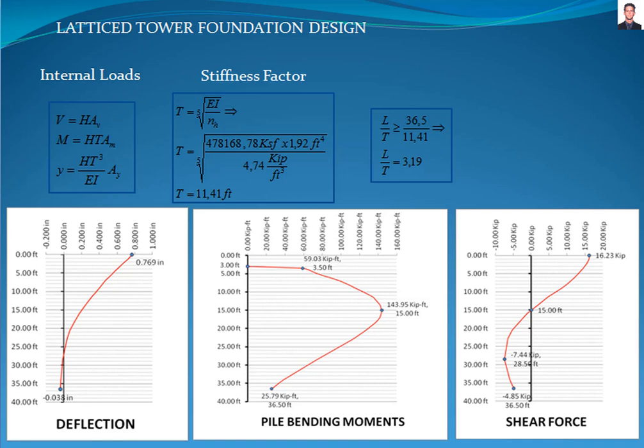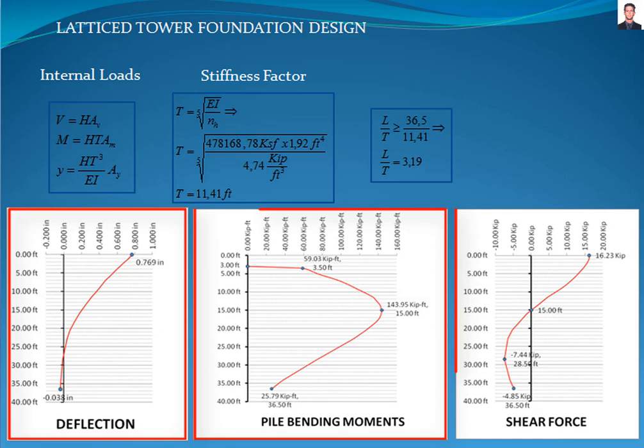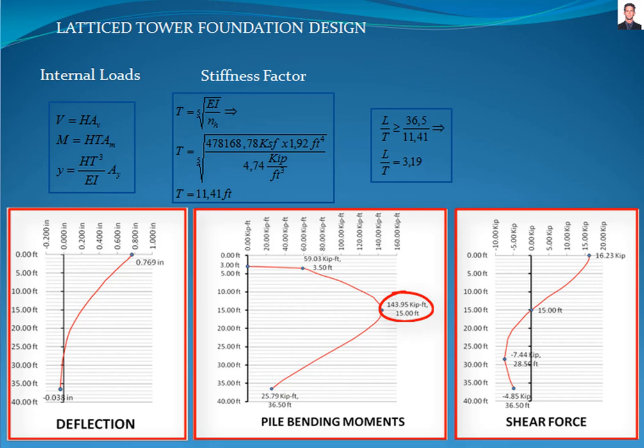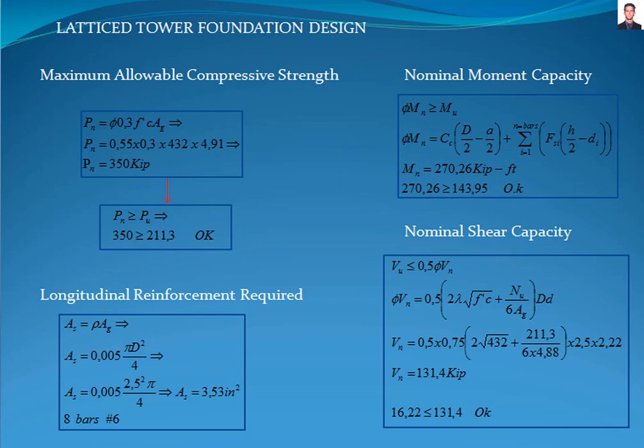After calculating the factors A_V, A_M, and A_y, the graphs of deflection, bending moment, and shear force acting on the pile due to the horizontal force transmitted from the lattice tower were constructed. The maximum shear force is 16.23 kilopounds, the maximum bending moment is 143.95 kilopound-feet, and the maximum deflection at the top of the pile is 0.77 inches.